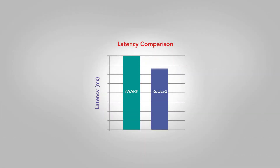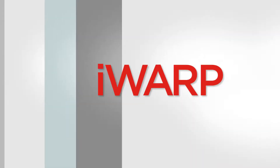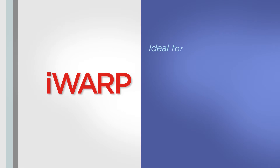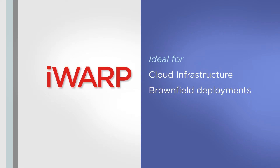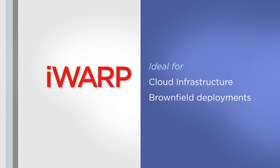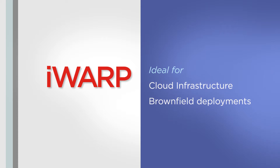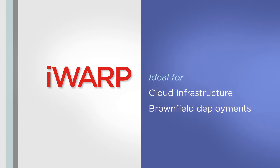iWARP latency is higher, but not enough to be noticed in most cases. TCP's congestion control helps make iWARP the perfect choice for large-scale clusters in a cloud infrastructure and for brownfield deployments, because there's no need for special Ethernet switches or extensive reconfiguration.